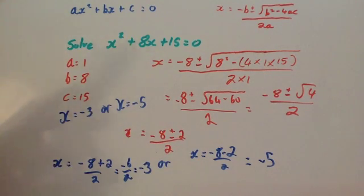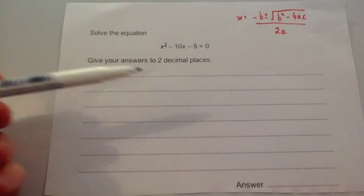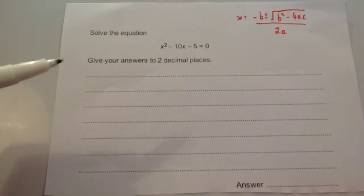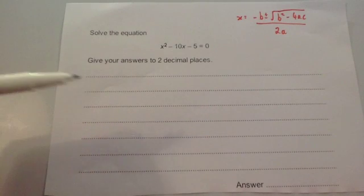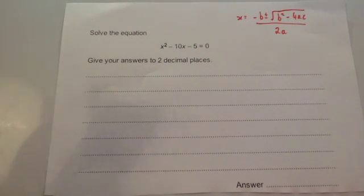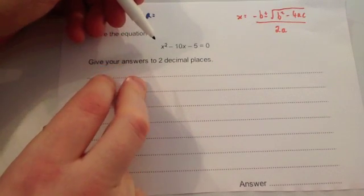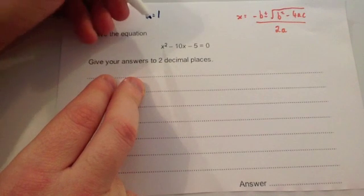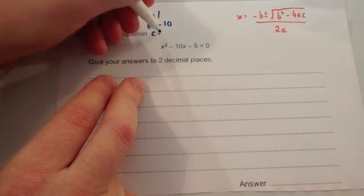That's how we use the quadratic formula to solve a quadratic. Now let's have a typical exam question: solve the equation x squared minus 10x minus 5 equals 0, giving your answer to two decimal places. The clue that we'll be using the quadratic formula is that we need to give the answer to two decimal places — normally when you factorise you get an integer or a simple decimal. So let's label a, b, and c: a equals 1, b equals negative 10, and c equals minus 5.